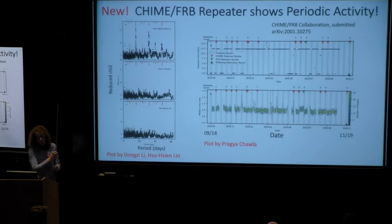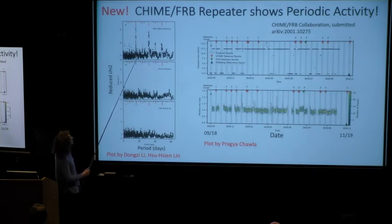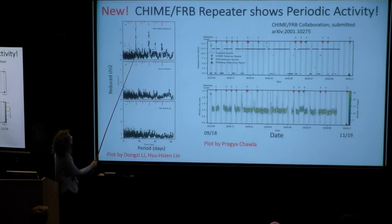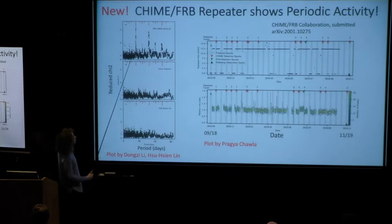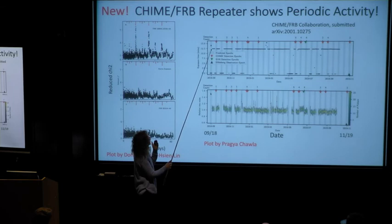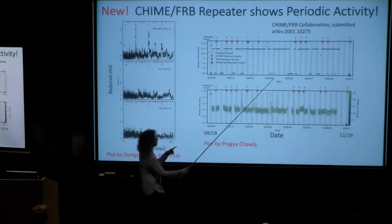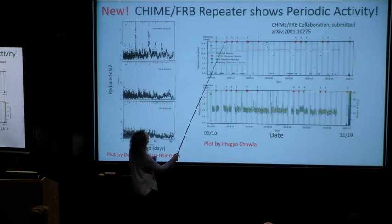Very recently, we reported that one of our most prolific repeaters shows periodic activity. Taking all 27 or 28 bursts and forming a periodogram, there's a clear periodicity at 16.3 days with harmonics. We have verified the source exposure does not contribute to this — random events suffering the same exposure don't show it, and a nearby radio pulsar shows nothing similar. Only this source shows this periodicity.